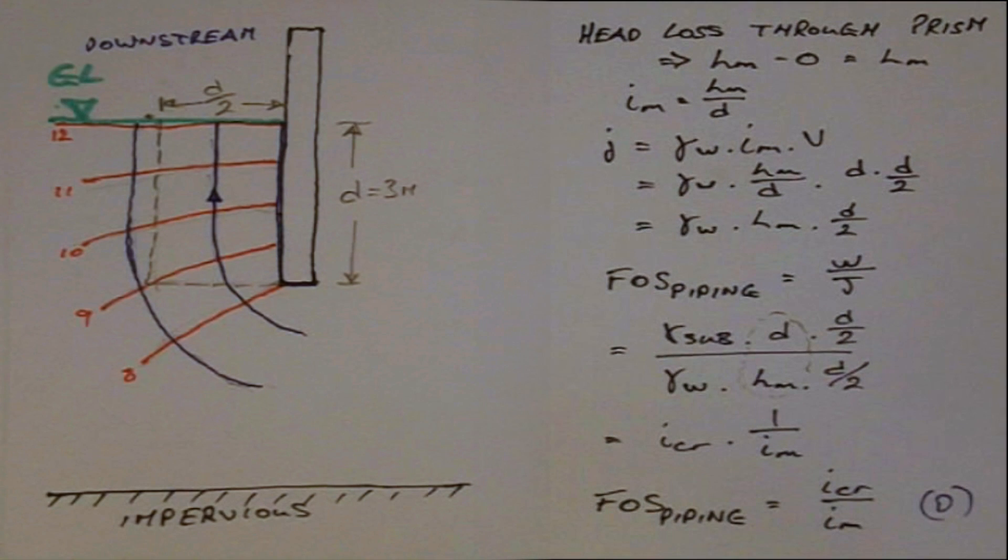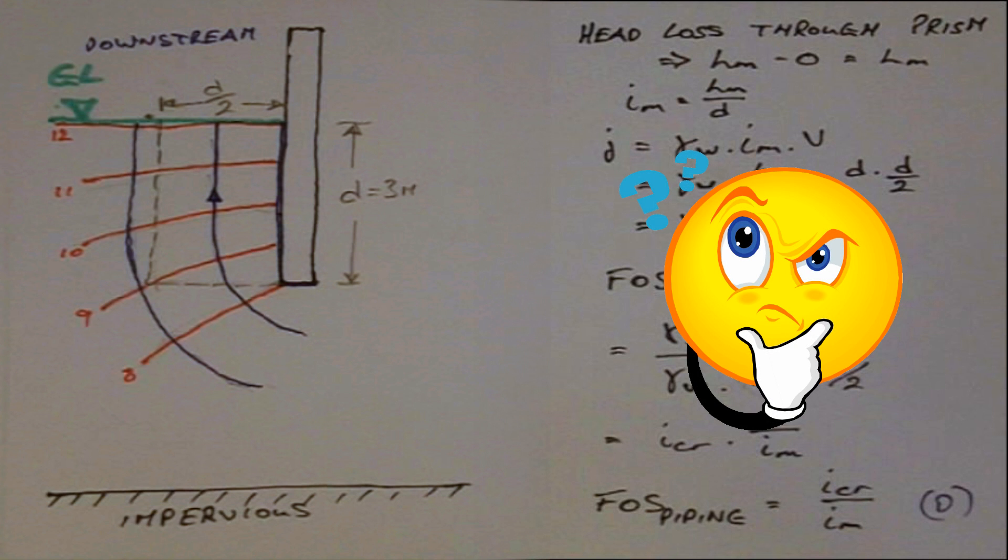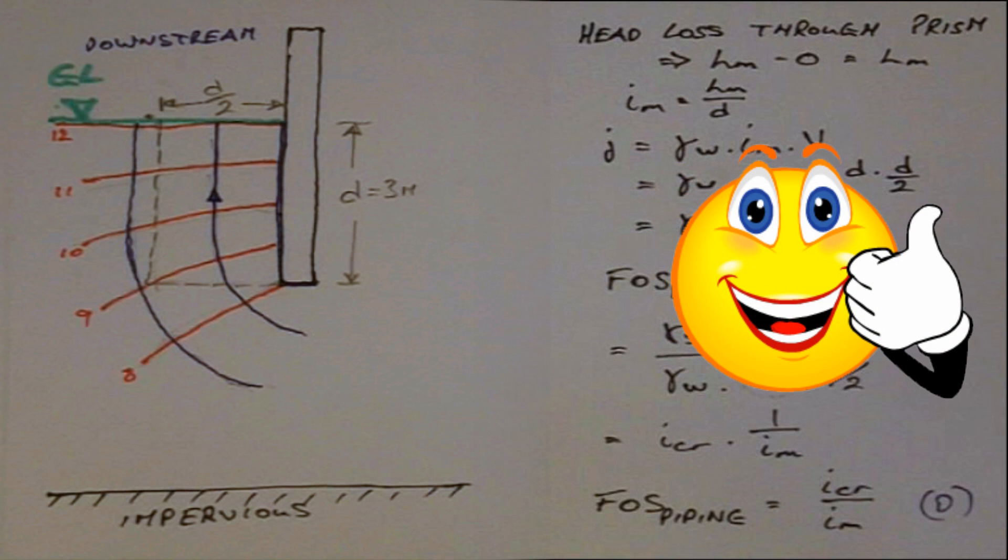In the design of structures involving seepage, it's vital that the engineer is able to calculate the factor of safety against boiling and piping and that they have the experience to judge if these factors are adequate for the safety of the structure.